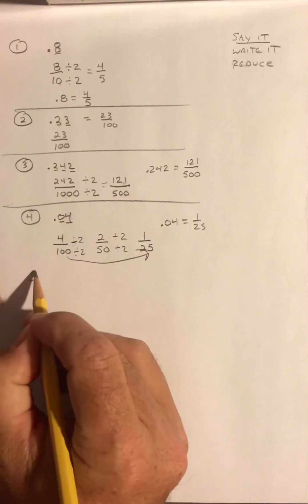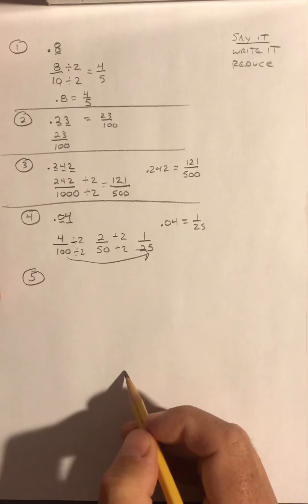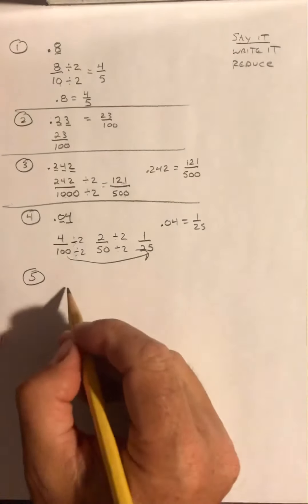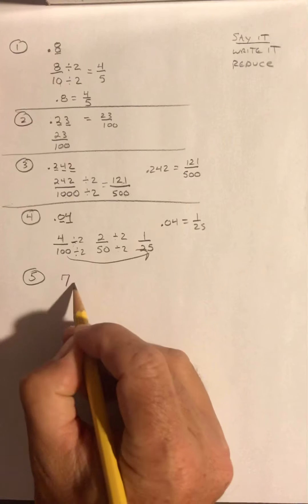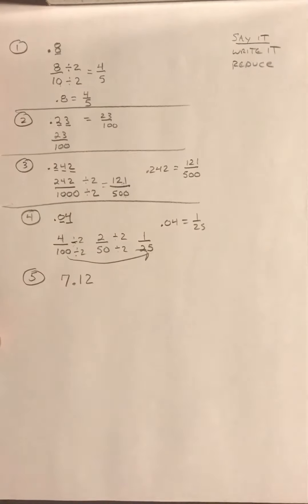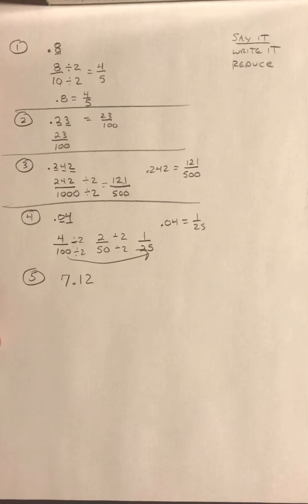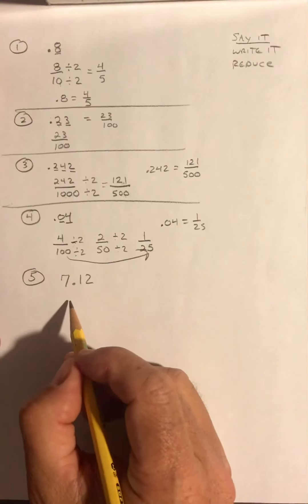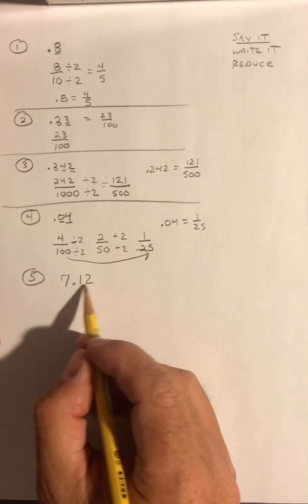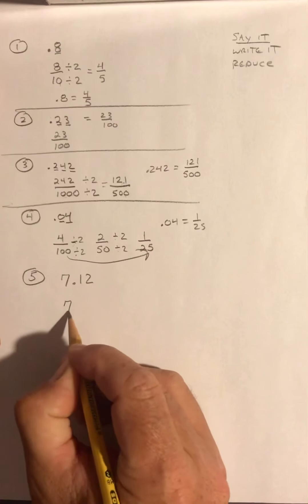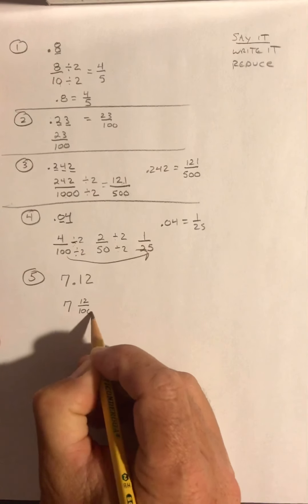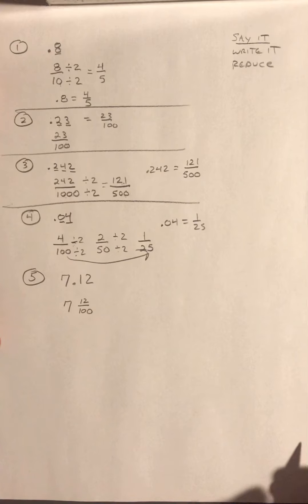Last example. Let's try 7.12. A little different example. Notice this has a whole number there, in other words, a number to the left of the decimal. I am going to say it correctly. It's not 7.12. This is 7 and 12 hundredths.